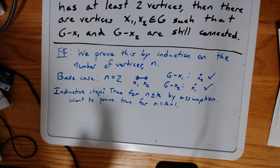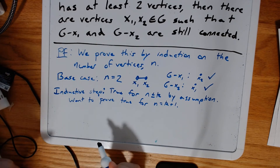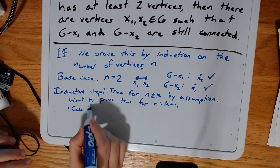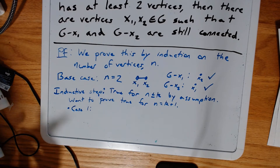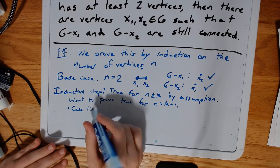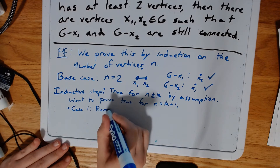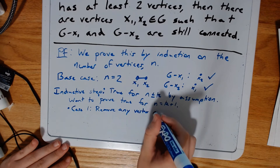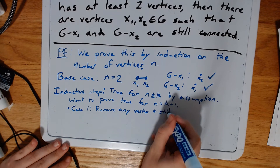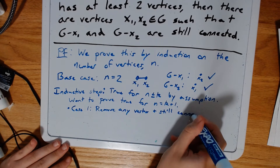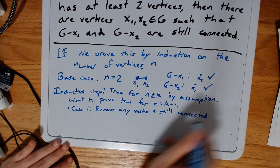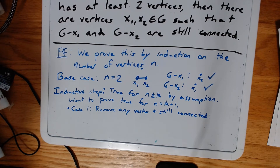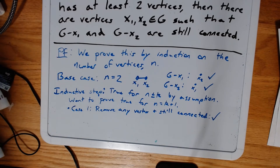So we have basically two cases here. Case 1 is the easy one: if we remove any vertex and still get something connected, then there are definitely two vertices that we can remove to still have a connected graph, so we're done immediately.